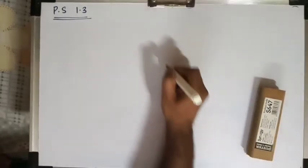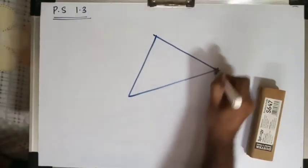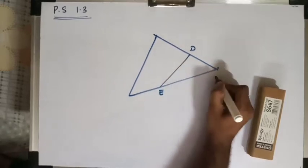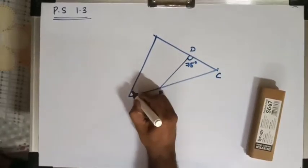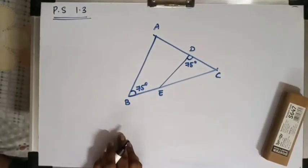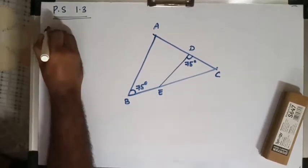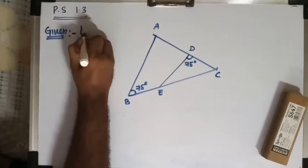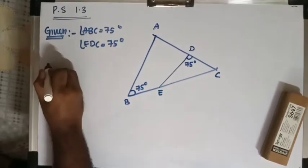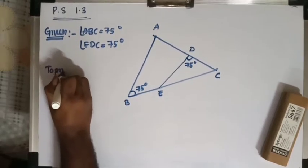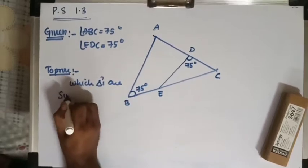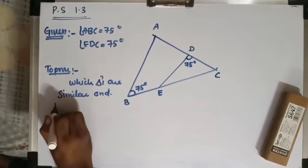Now look here. You have been given one figure. The question is: state which two triangles are similar and by which test. The given information is angle ABC equals 75 degrees and angle EDC is also equals 75 degrees. We need to identify which triangles are similar and the test of similarity.